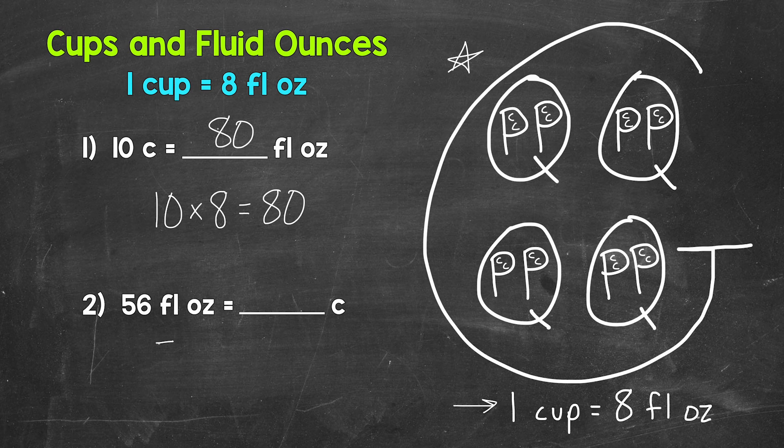We need to do 56 divided by 8. When we go from fluid ounces to cups, we divide by 8. 56 divided by 8 gives us 7, so 56 fluid ounces equals 7 cups.